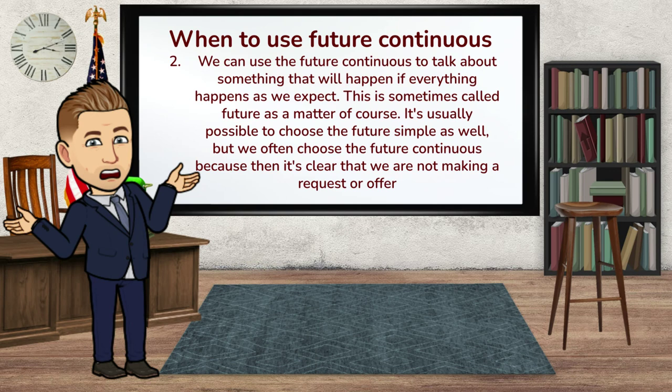Rule number two with the future continuous: we can use it to talk about something that will happen if everything happens as we expect. This is sometimes called 'future as a matter of course.' It's usually possible to choose the future simple as well, but we often choose the future continuous because it makes clear that we are not making a request or offer — we're almost predicting something that is absolutely going to happen as long as things don't go wrong.